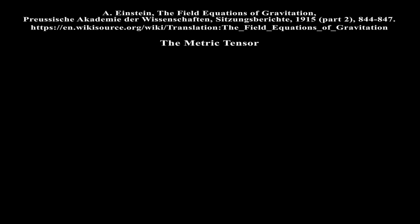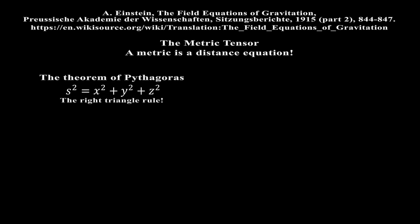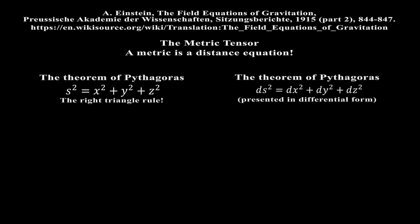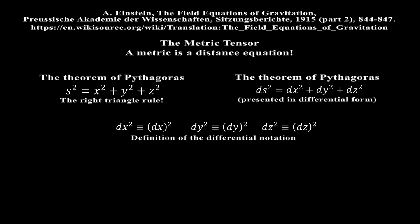Before considering Einstein's field equations, there are a few preliminary mathematical issues to explain. The first is what is called the metric tensor and its components. In simple terms, a metric is a distance equation. For distance, the length s of the hypotenuse of a right triangle in the three Cartesian coordinates x, y, and z is given by this expression. In differential form, we can write this Pythagorean relation in this way. Note that all these differential terms are defined in this way. The coefficients of the x, y, and z terms are the components of the related metric tensor. The metric tensor is denoted by this symbol. In the case above, for the right triangle, all the components of the metric tensor are just 1. Metrics can be generalised to higher dimensions, and the coefficients of the coordinates in a metric need not be just 1. We can write a general metric in this compact way.